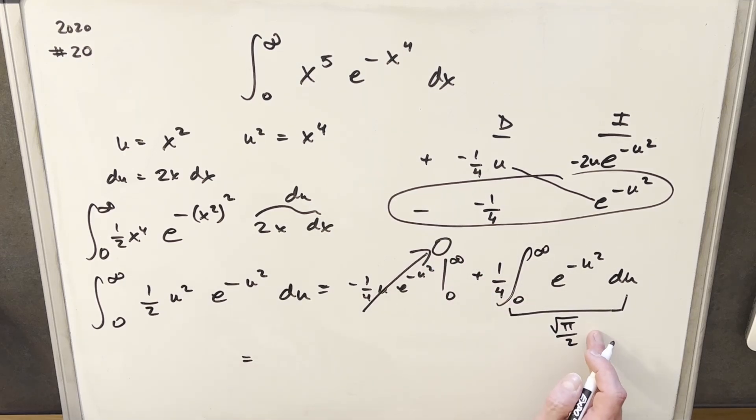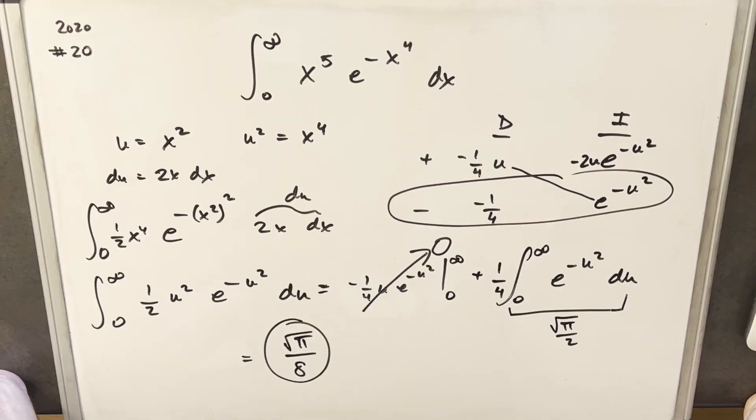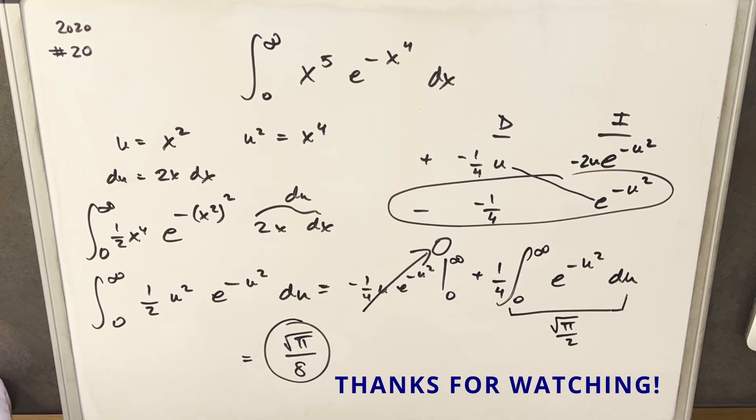So for our final solution we're just multiplying square root of pi over 2 times 1 fourth and we get square root of pi over 8. That's it. I thought that was a very interesting problem today. And if you want to check out more like this, I have a bunch of problems like this. I did a quiz recently on Gaussian integrals. I'll provide a link in the description if you want to do some more of these. And we'll stop it there. Thank you for watching. Please like and subscribe. Have a good day.